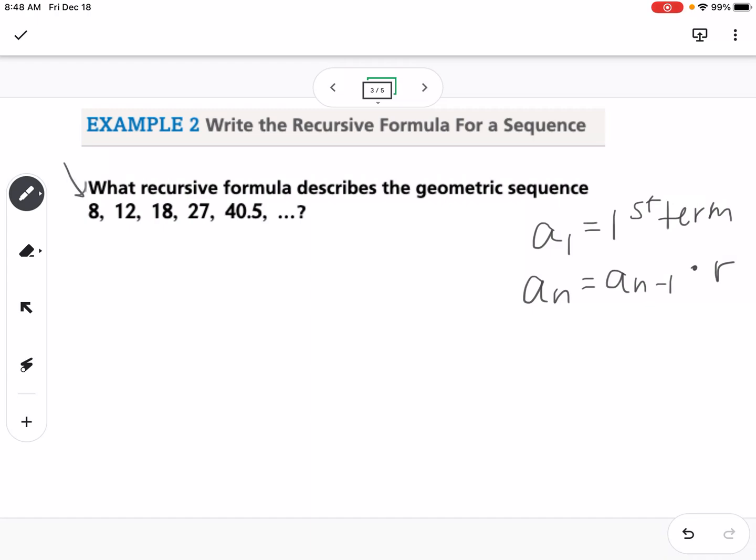We need to know the first term and the common ratio. The first term is easy – that's 8. To find the common ratio, we take the second number divided by the first number. So 12 over 8, if we reduce that down, would be 6 over 4, which is 3 over 2. Just to be sure, let's do 18 over 12. I could divide both by 6, that would be 3 over 2.